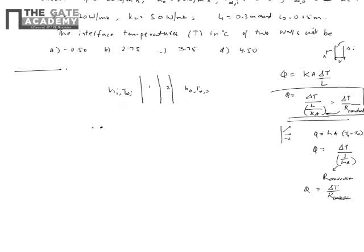Drawing the resistance network: starting from T∞_i, there is a convective resistance 1/(h_i·A), then conduction resistance l1/(k1·A) through wall 1, then l2/(k2·A) through wall 2, then convective resistance 1/(h_o·A), and finally T∞_o. The total temperature difference is T∞_i − T∞_o across four resistances in series — two conductive and two convective.